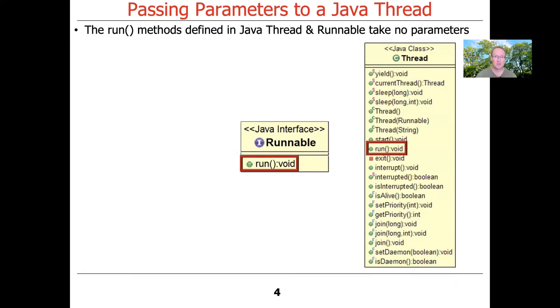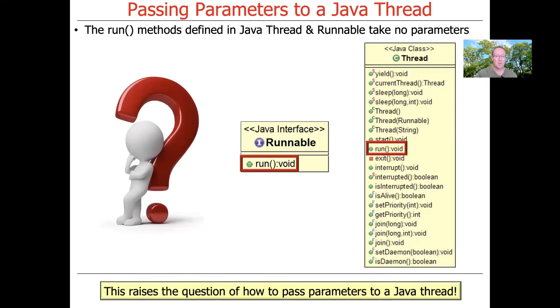Well, the answer, of course, is that there's better ways to do it. And the designers of Java knew that, so they didn't bother trying to make run take parameters. But you have to know how to do this, and it's something that requires knowing idioms and patterns in how you program Java and Java threads.